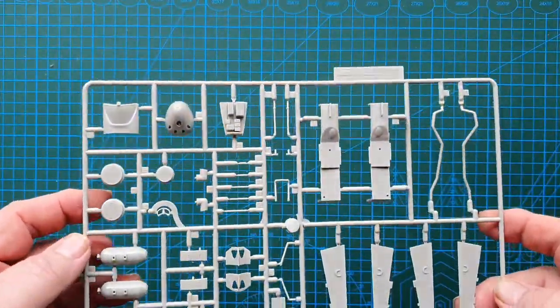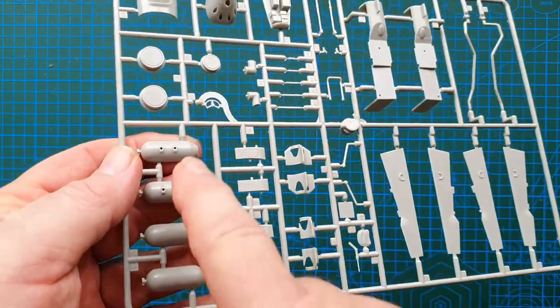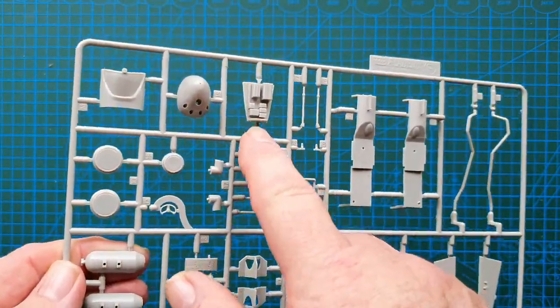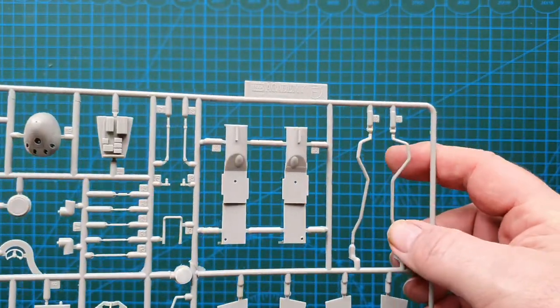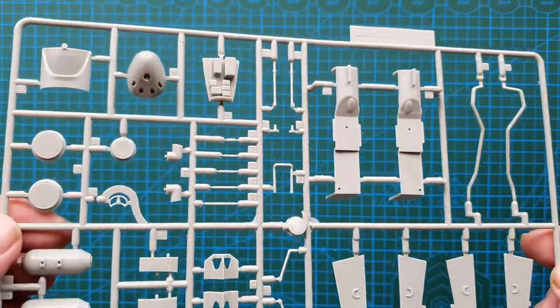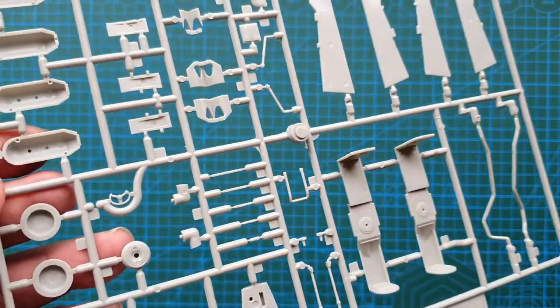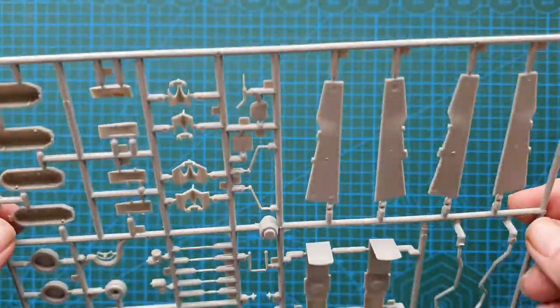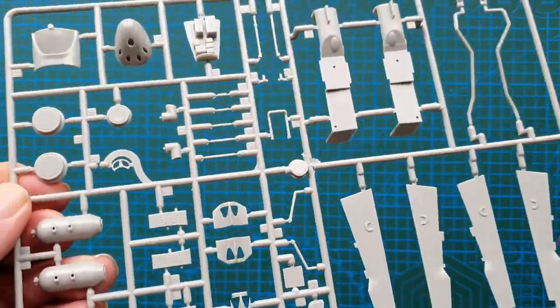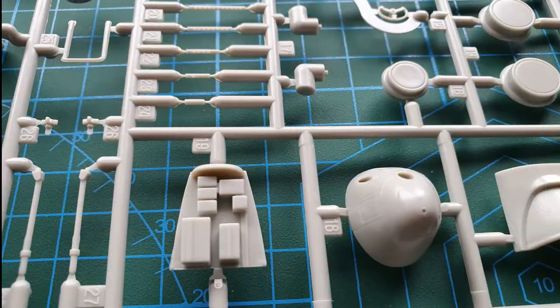What we have here is your undercarriage doors, bombs, bomb tails, bomb bodies, nose, interior. Really nice. Not sure, exhausts, possibly. I'll have to look that one up. And again, nice detail. Very fine parts here, but easily removed without breaking. Not much flash. I love it. That's pretty good.